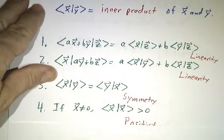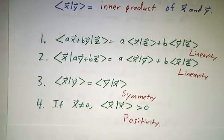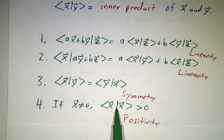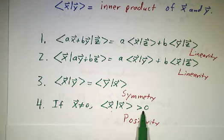And the last thing we'd like is we'd like the inner product of any vector with itself to be positive. Well, unless it's the zero vector. If it's the zero vector, you get zero. But for any non-zero vector, you get a positive number. We call that the positivity of the inner product.